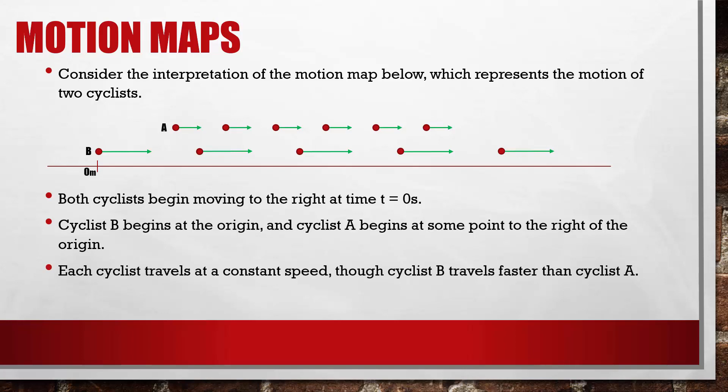Each cyclist travels at a constant speed, though cyclist B travels faster than cyclist A. At some time between t equals 1 second and t equals 2 seconds, cyclist B overtakes or passes cyclist A.